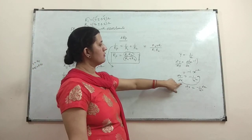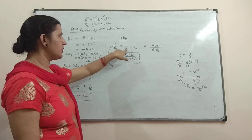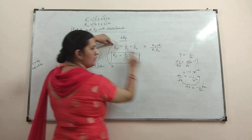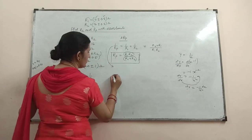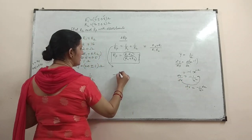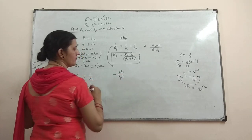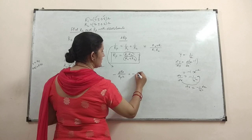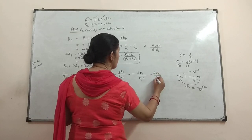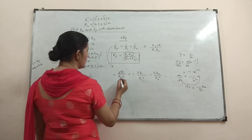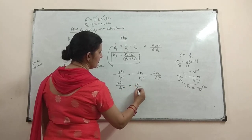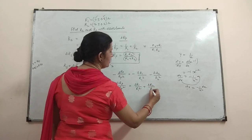Now I will apply this formula to the equation and separate each term. Differentiating 1 by Rp gives minus 1 by Rp squared times delta Rp, equal to minus delta R1 by R1 squared minus delta R2 by R2 squared. Taking minus 1 from all sides, you will have delta Rp by Rp squared is equal to delta R1 by R1 squared plus delta R2 by R2 squared.